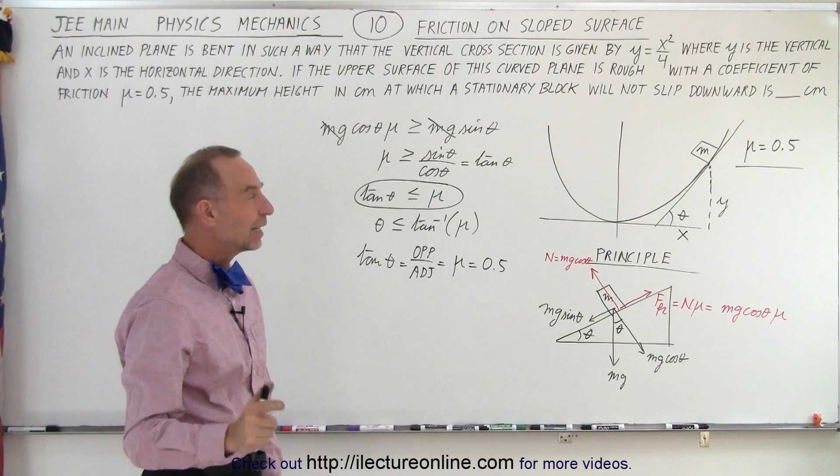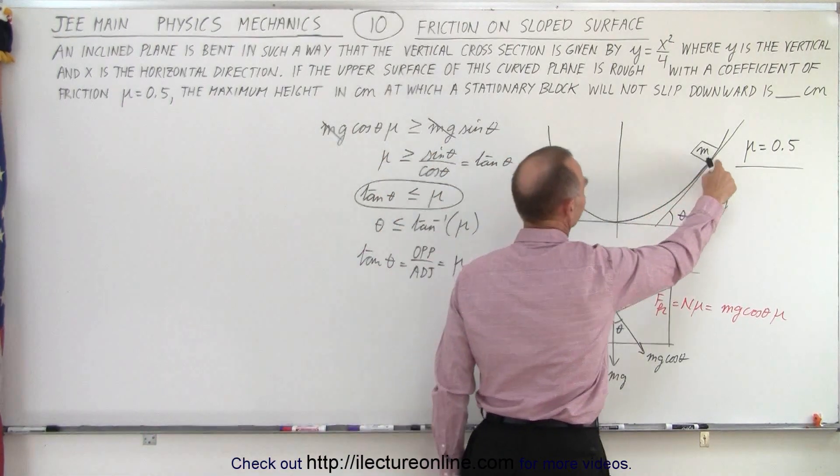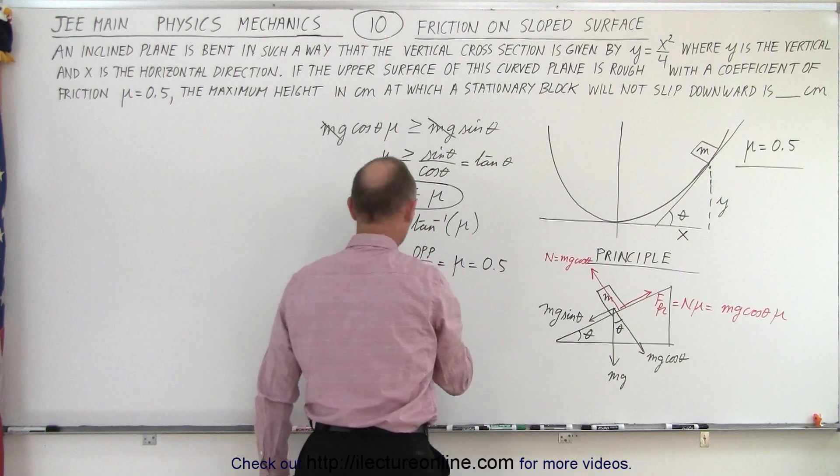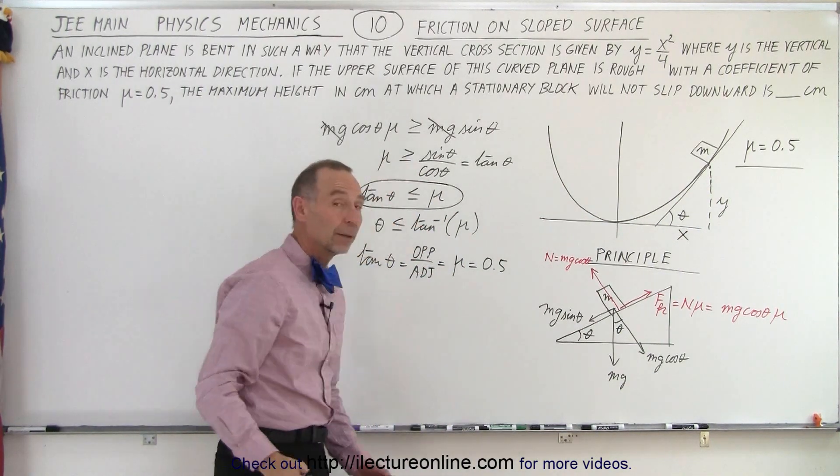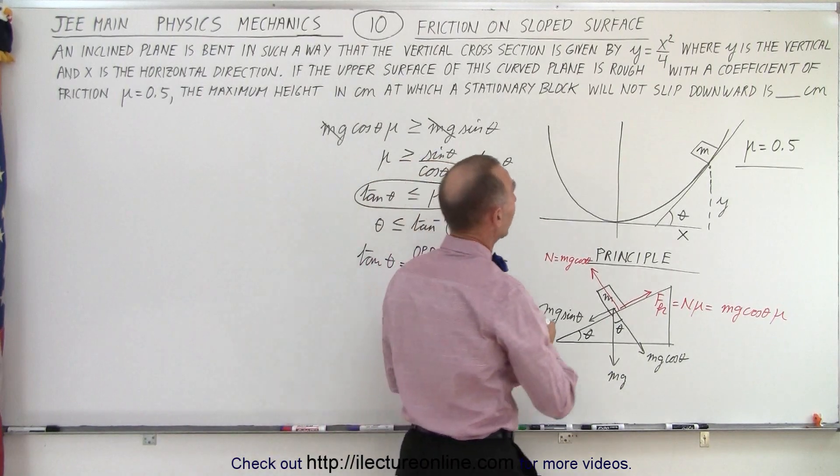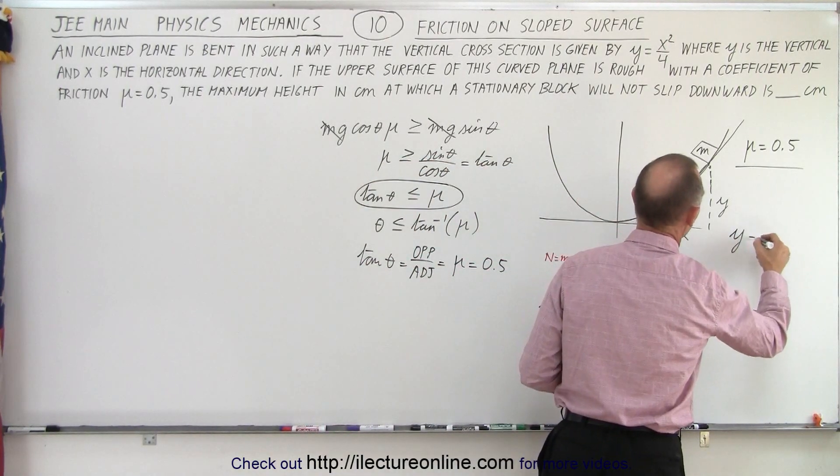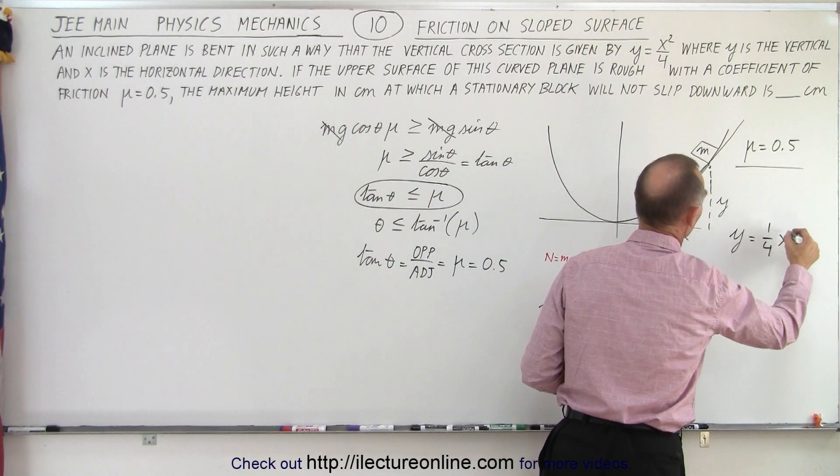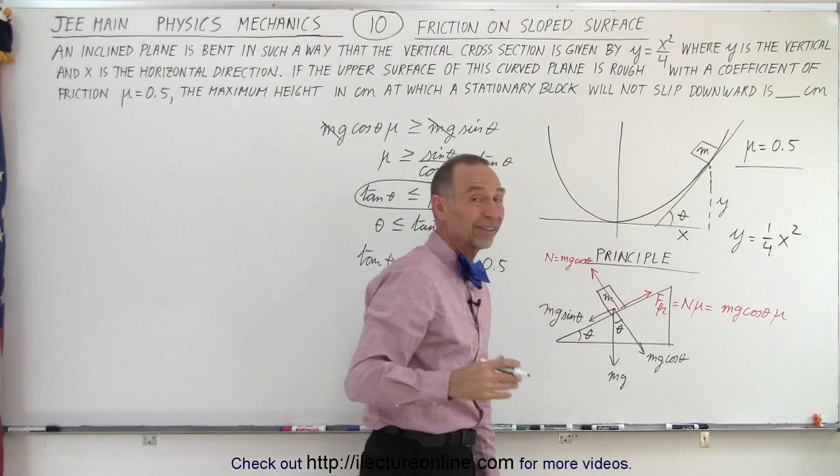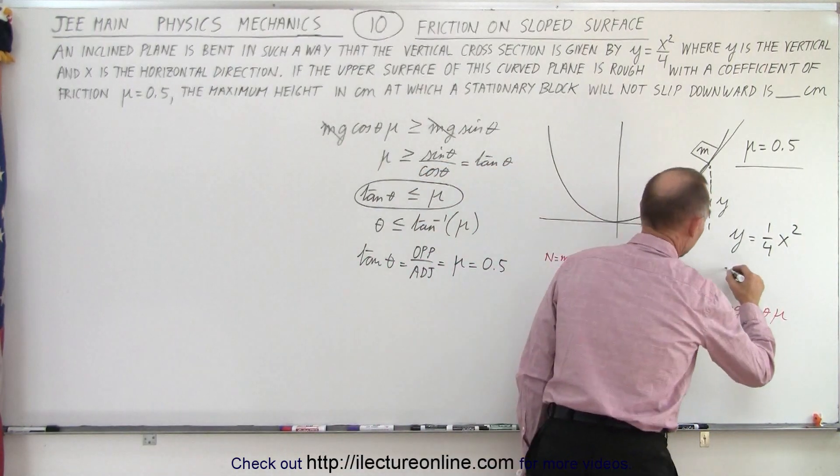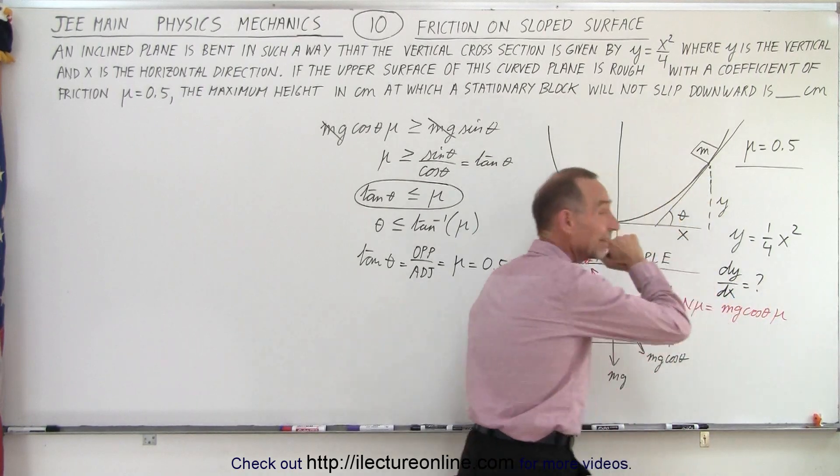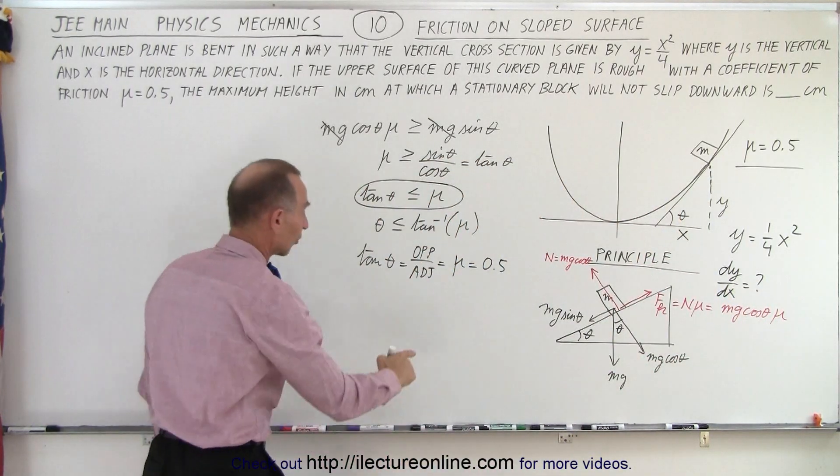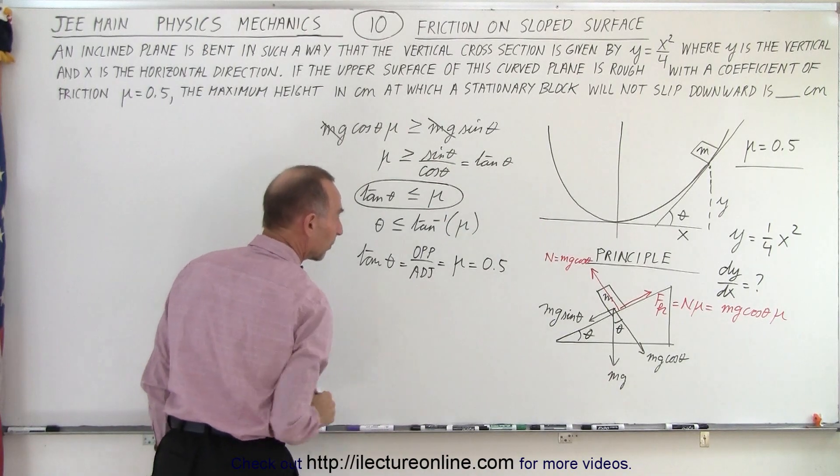Okay, and where should we go next? Ah, we need to know the slope at this point. We need a slope which is opposite over adjacent, which is equal to 0.5. But we're given the equation of the line. The equation is that y is equal to one quarter x squared. So essentially what we're looking for is we're looking for dy/dx and setting that equal to 0.5, because that's what the slope is based upon our principle here.